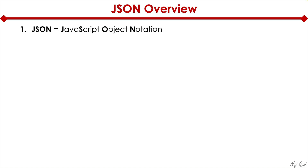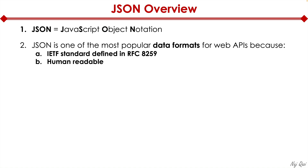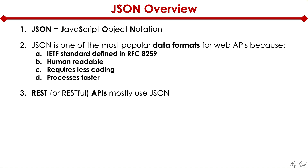JSON stands for JavaScript Object Notation. It's one of the most popular data formats for dealing with web APIs. First, it's an IETF standard defined in RFC 8259, which makes it widely adopted globally as an open standard. It's human readable, making it easy to understand and learn. It requires less coding, so you don't need to be an expert developer to write JSON scripts. JSON also processes faster on machines, and REST or RESTful APIs mostly use JSON — which is a big reason for its popularity.